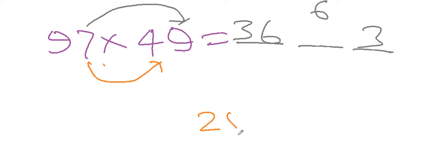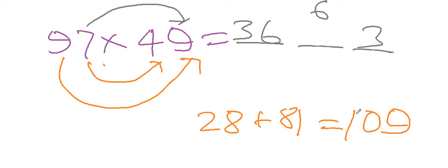And for calculating the second digit, we multiply 7 into 4, that's 28. And then we multiply 9 into 9, that is 81. We will get 28 plus 81 equals 109. So for 109, we write 9 here and carry 10 here.